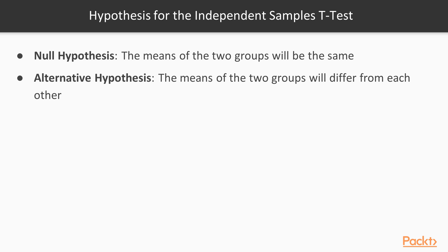In terms of hypotheses, as usual there are two. The null hypothesis states that the means of the two groups will be the same. The alternative, or research hypothesis, is that the means of the two groups will differ from each other. Going back to the example of comparing females and males on income: the null hypothesis says females and males are making the same income, whereas the alternative hypothesis says the two groups differ — one group is making more or less income than the other.